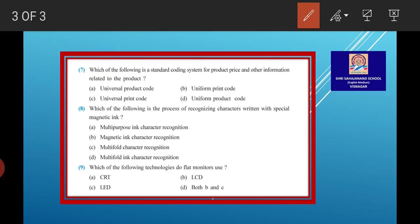Question number 7, which of the following is standard coding system for product price and other information related to the product? Answer A. Universal Product Code.